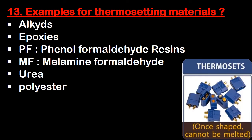Question number 13: examples for thermosetting material. First is alkyd, epoxy, PF phenol formaldehyde resin, MF melamine formaldehyde, urea, and polyester.